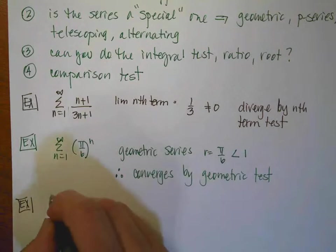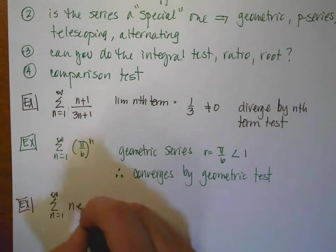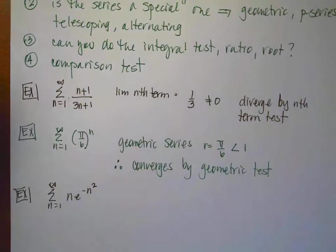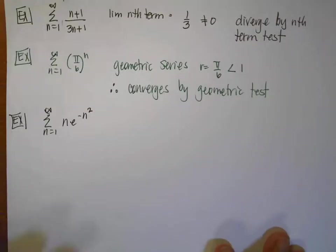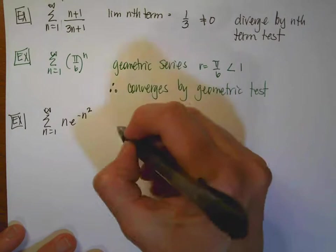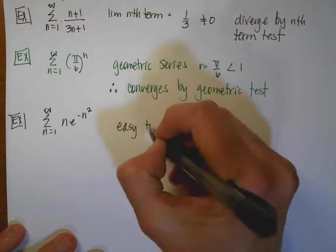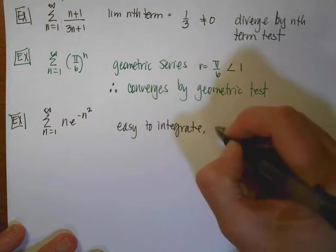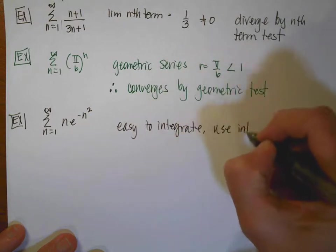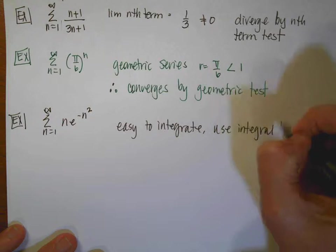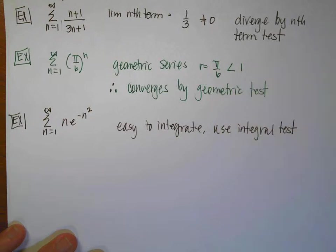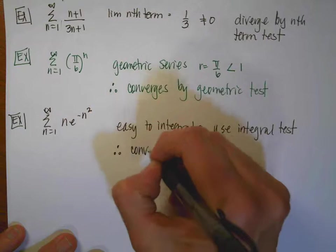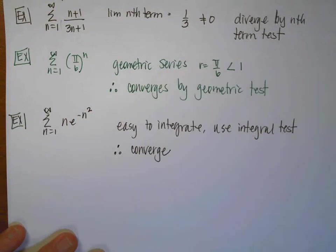The third example: I have the sum from n equals 1 to infinity of n·e to the negative n squared. This one is actually fairly simple to integrate because I could just do u-substitution — so this one is easy to integrate — and so we're going to use the integral test. I would leave that math to you, and therefore this one is going to converge.